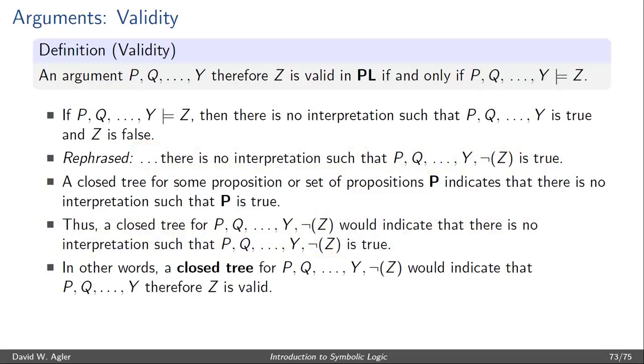And if there's no interpretation that would make P, Q, Y, and not Z true, then we would know that P, Q, Y, therefore Z is valid.